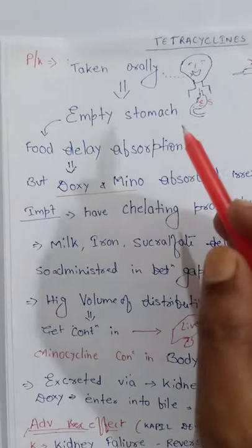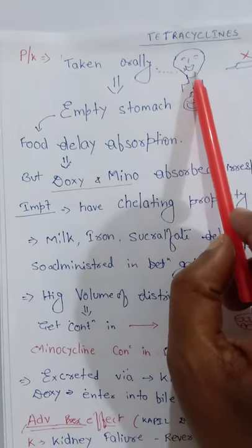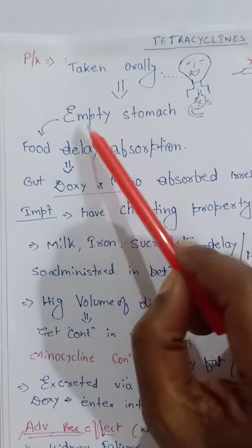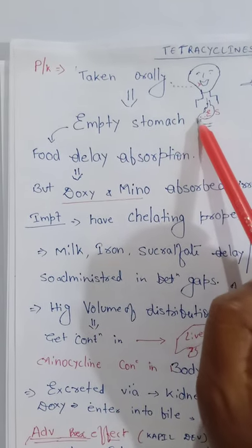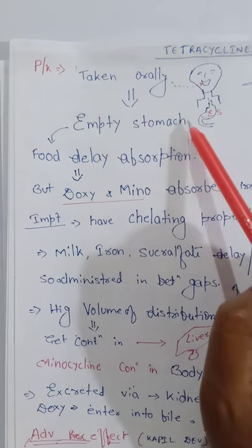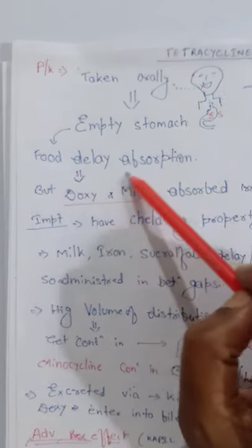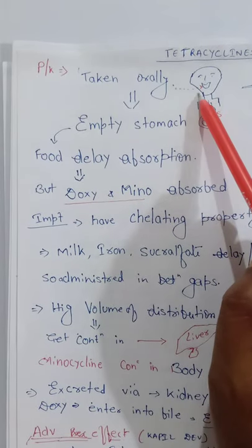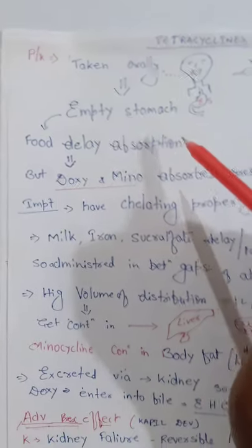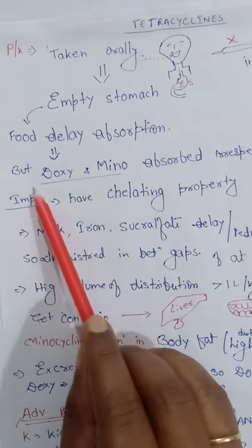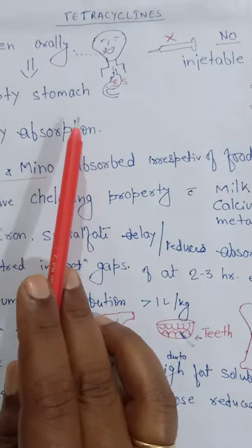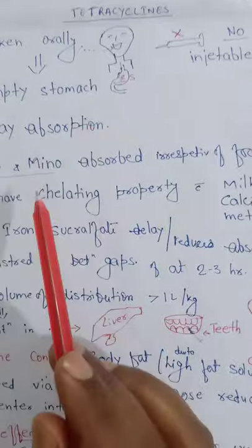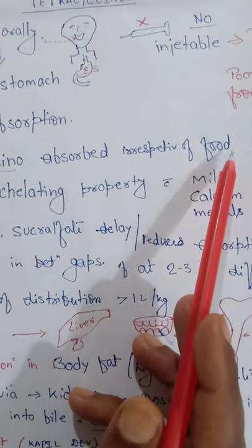Pharmacokinetics: tetracycline is taken orally and on an empty stomach, because food delays absorption. However, doxycycline and minocycline are absorbed irrespective of food. Only tetracycline requires an empty stomach.